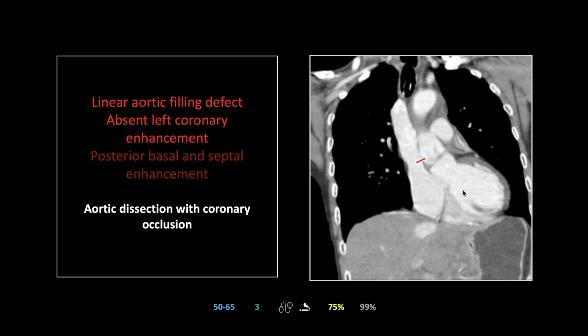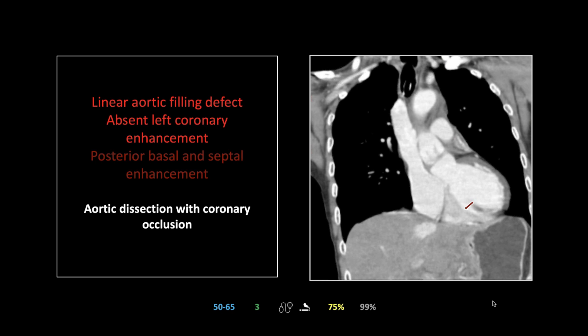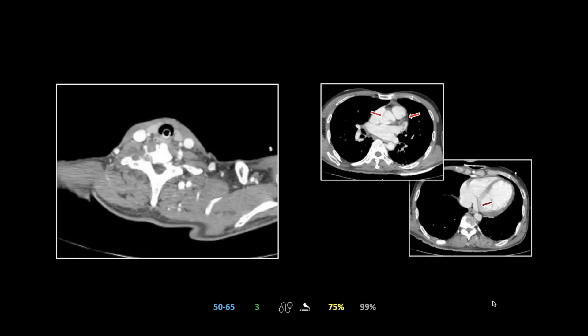The linear filling defect is much too high — it is significantly higher than the level of the valve, which is probably sitting lower. Again, note the perfusion of the normal septum and base, but the hypodense under-perfused myocardium is clearly visible, and there you can see the left coronary with no contrast within it. The posterior basal and septal enhancement is preserved.